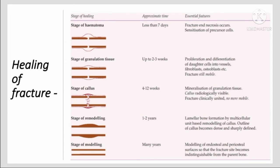In the callus stage, there is mineralization of granulation tissue, and radiologically the callus becomes visible. The fourth stage is remodeling, which lasts about one to two years. In this stage, regular bone replaces the hard callus, and in X-ray the bone would look uneven.